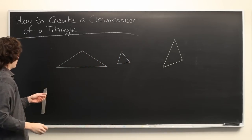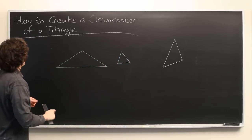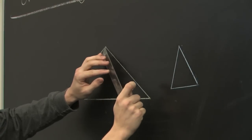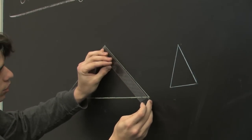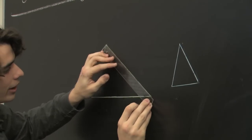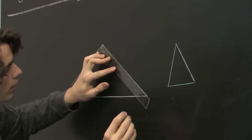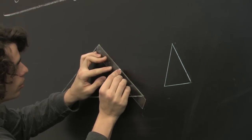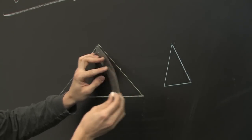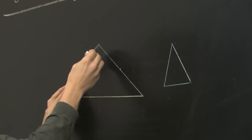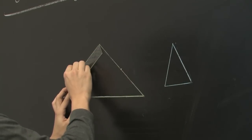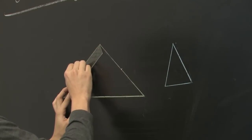In order to find the circumcenter, you'll want to find the midpoints of at least two of your sides. This one is about eleven and a half inches long, so we'll go to the midpoint here and mark that off. Do the same for the other leg — this one's twelve inches.